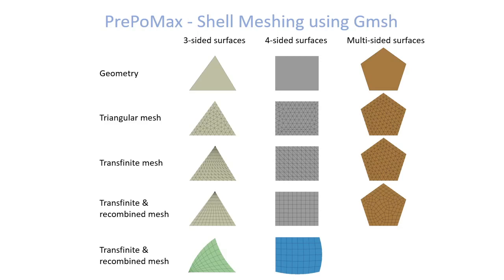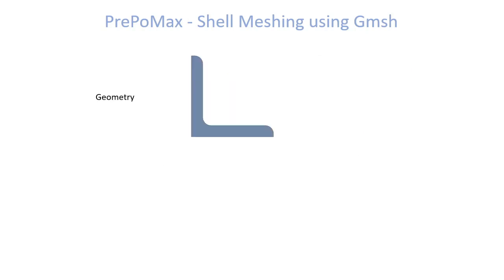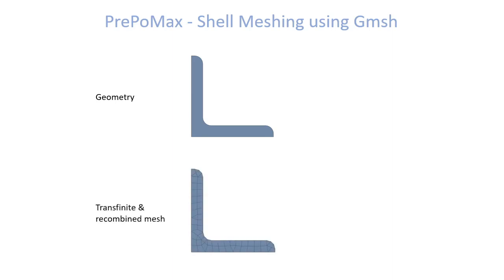The next question is how we can create better meshes for multi-sided surfaces. In this case we have a geometry with multiple edges and we can apply a transfinite and recombined mesh, but the result is not a structured mesh as we would like. So what we can do is split the surface into patches.